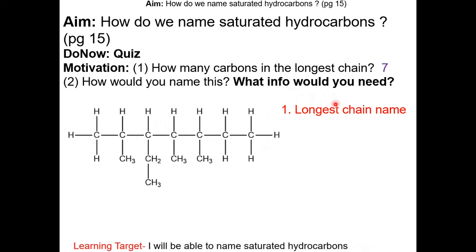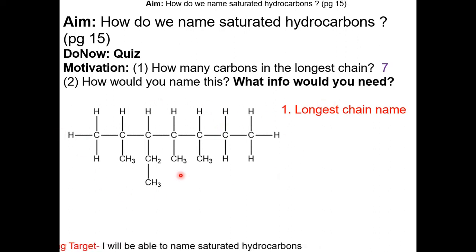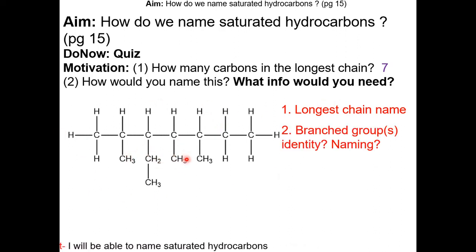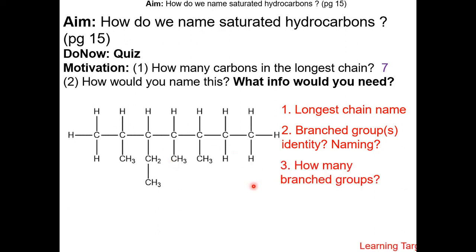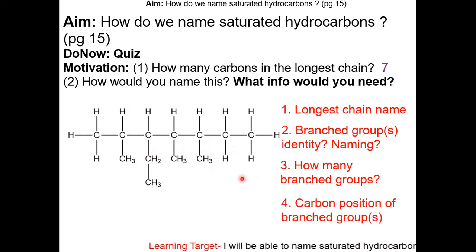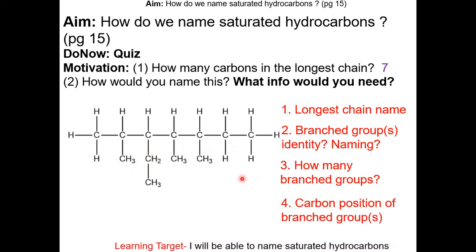What other information would we need to name this molecule? Notice that this molecule has some branch groups. These branch groups are different from each other — this branch is 2 carbons, this branch is 1 carbon. Also, we need to count how many branch groups there are; there are 4 branch groups. And we need to indicate where the branch groups are in this molecule.